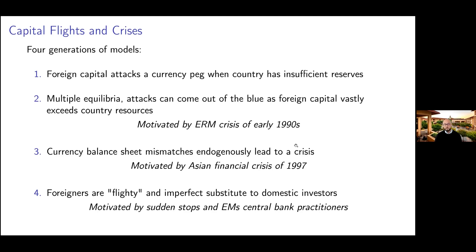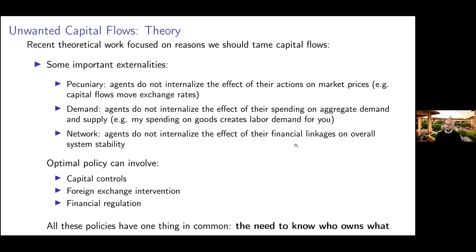The third model, very used these days, is models of endogenous mismatches created based on the Asian financial crisis, where Asian economies had borrowed heavily in foreign currency. The idea is that my currency depreciates because foreigners are pulling out, but because I borrow in foreign currency, that induces a negative wealth effect — I lose net worth, the banking system lends less, the economy worsens, foreigners pull out even further and depreciate the currency more, creating a spiral deeper into crisis. In more recent years, there is a fourth model — a generalization of all these — which simply thinks of foreign capital as more flighty: foreign capital pulls out at the first sign of trouble, and domestic investors are not a perfect substitute, creating externalities.